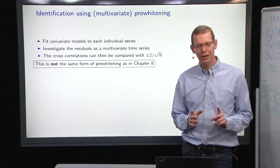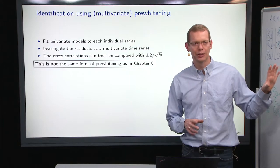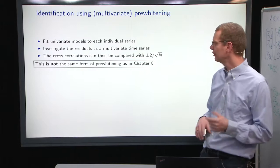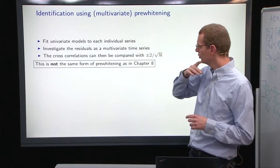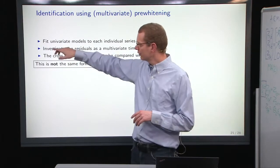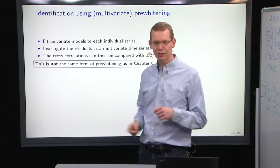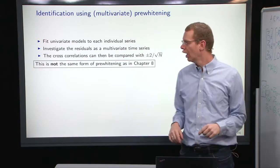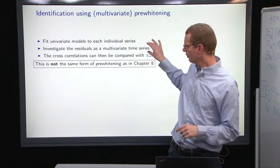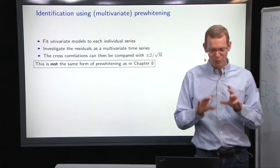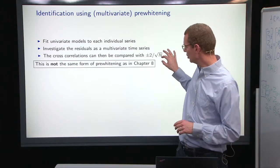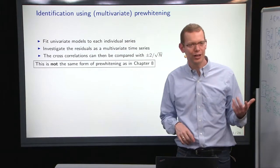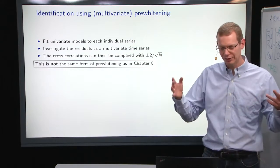Now, pre-whitening was something we did last week. Pre-whitening in a multivariate model is not the same as what we did last week. What you would do if you do this is that you fit univariate models to all of the individual time series, and then you look at the residuals from that and try to see what you can add and look at the cross-correlation between them and compare with the usual plus minus 2 divided by the square root of n.